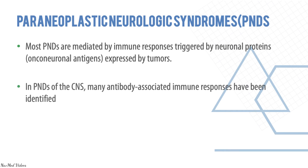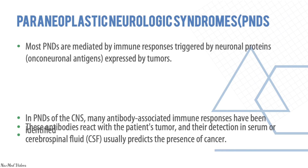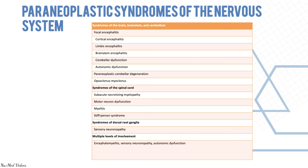In paraneoplastic CNS disease, many antibody-associated immune responses have been identified. These antibodies react with the patient's tumor, and their detection in serum or CSF usually predicts the presence of cancer. Examples of paraneoplastic syndromes of the nervous system include focal encephalitis, cortical, limbic, and brainstem encephalitis, and spinal cord syndromes like motor neuron dysfunction, myelitis, and sensory neuropathy.